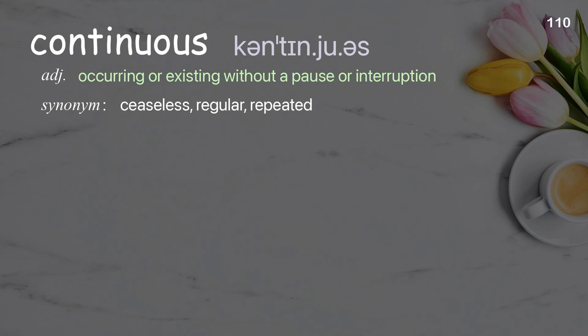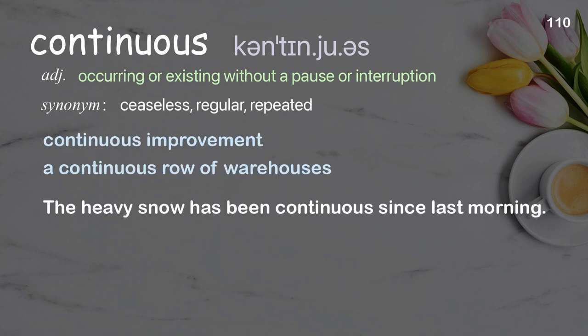Continuous: Occurring or existing without a pause or interruption. Examples: Continuous improvement, A continuous row of warehouses. The heavy snow has been continuous since last morning.